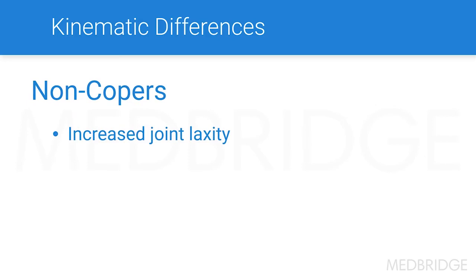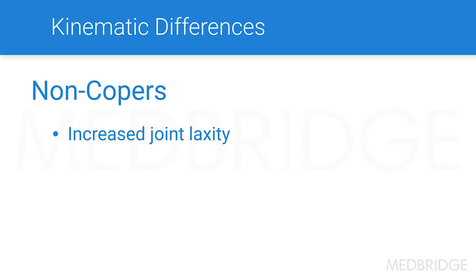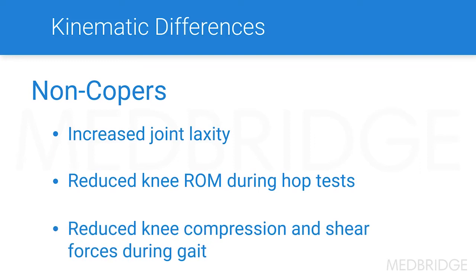Non-copers, on the other hand, are going to have increased joint laxity — they're going to feel hypermobile to you. They're going to have reduced knee range of motion, especially during hop tests, where they may hold the knee much more stiff and rigid than copers. They're also going to have reduced knee compression and shear forces during gait, so they're obviously protecting that limb as you assess the kinematic differences.